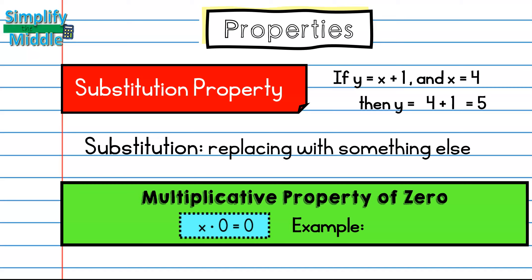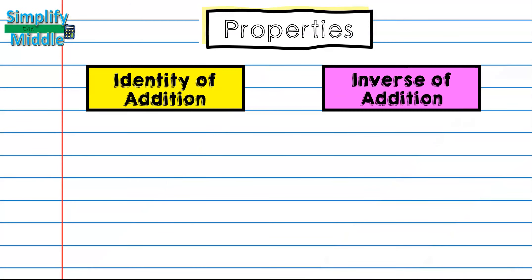Our next property is the multiplicative property of zero. An example would be x times 0 equals 0. This property states that anything times 0 is going to equal 0. So 300 times 0 would equal 0.